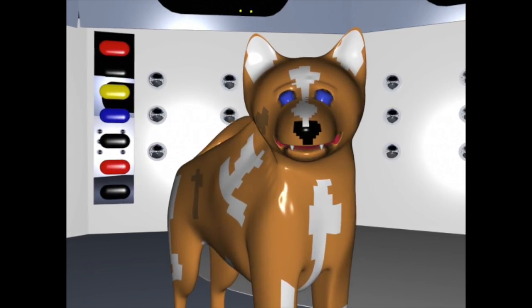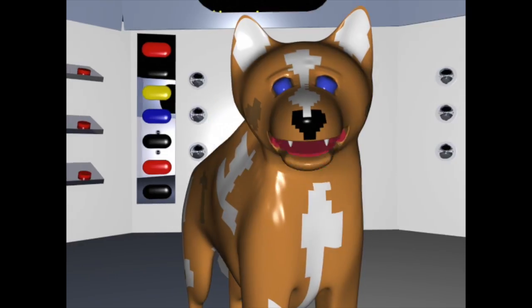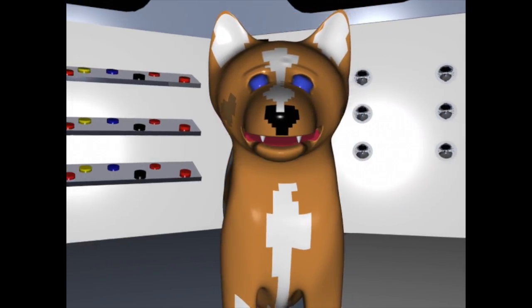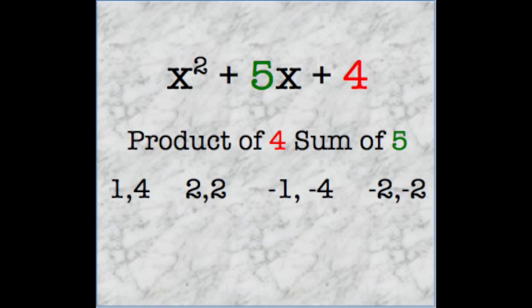To help us out, let's take a look at the product factors of our c value. In this case, 4. We can see that all these pair numbers multiply together to make 4. But which one also adds together to make 5?